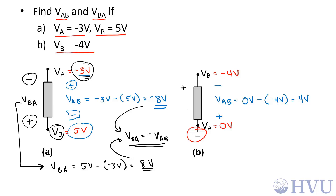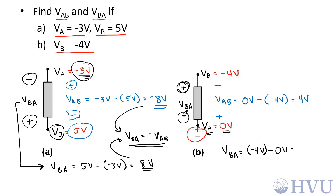If I change the order of the subscripts, that changes the assumed polarity, so now node B for VBA is at the positive terminal and node A is at the negative terminal. In this case, VBA is now negative 4 volts. I take the voltage at the positive terminal and subtract from that the voltage at the negative terminal, which is 0 volts. So that's negative 4 volts minus 0 volts, which is negative 4 volts. Again, the only difference between these two is their sign, so VAB is equal to the negative of VBA.